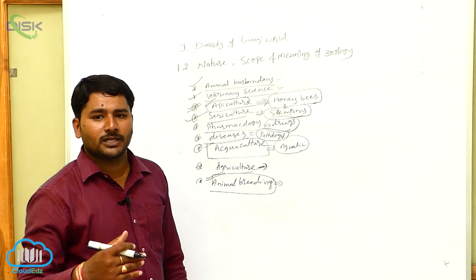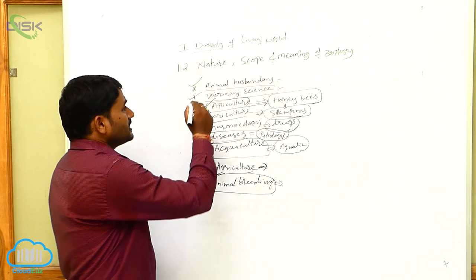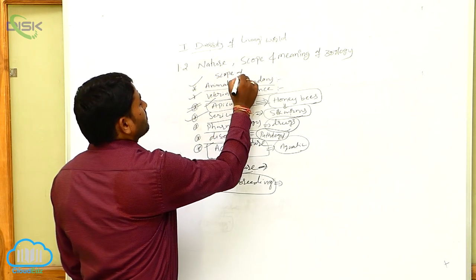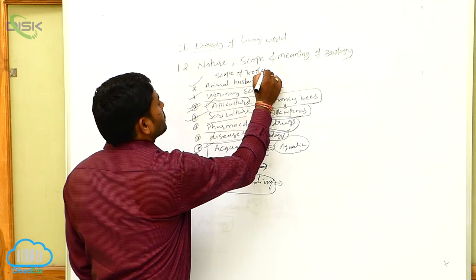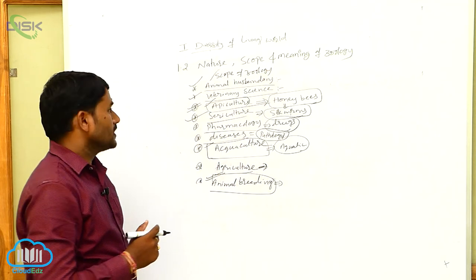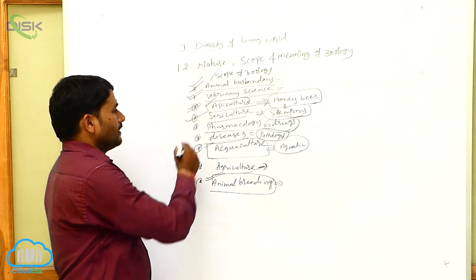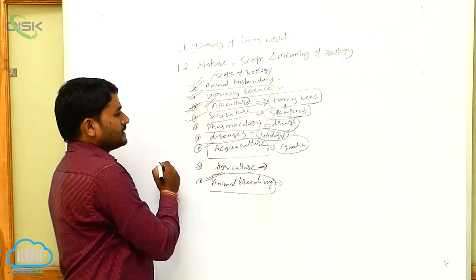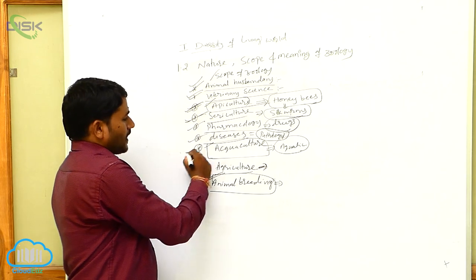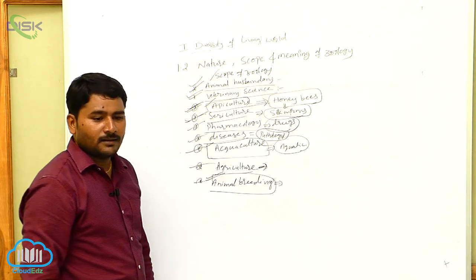This is the scope of Zoology in various fields: animal husbandry, veterinary science, apiculture, sericulture, pharmacology, diseases, aquaculture, agriculture, and animal breeding.